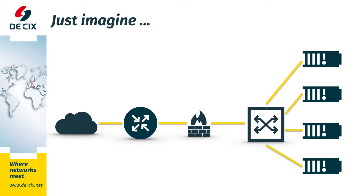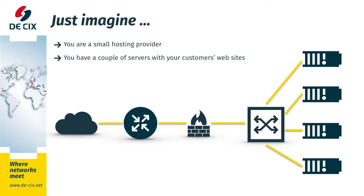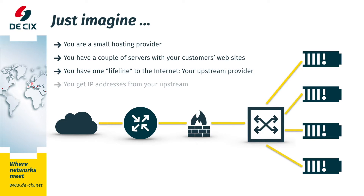Just imagine you're a hosting provider. You host a couple of servers on which you host your customer websites. You usually only have one lifeline to the internet, which is your upstream provider, and you get your IP addresses from your upstream. Basically, you're hanging on to the internet on a single thread.